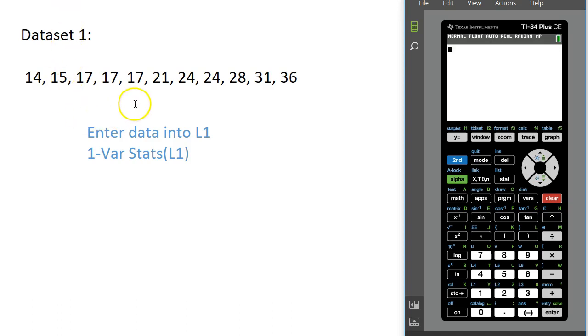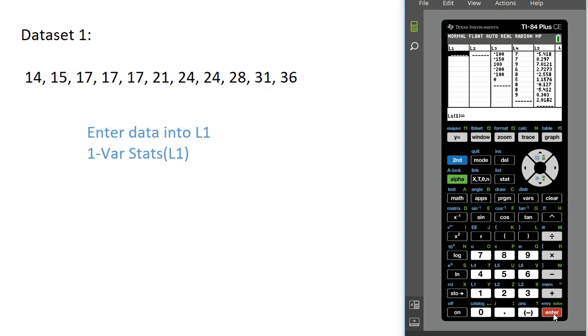The first thing we're going to do is enter this data on our calculator. You'll press the Stat button, select Edit, and we're going to put these values into List 1.